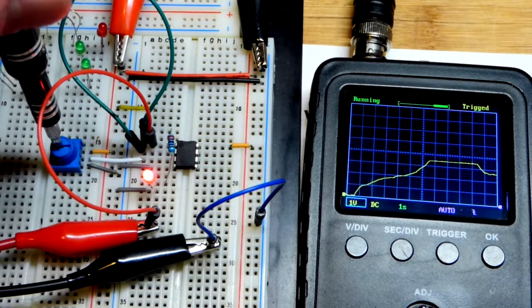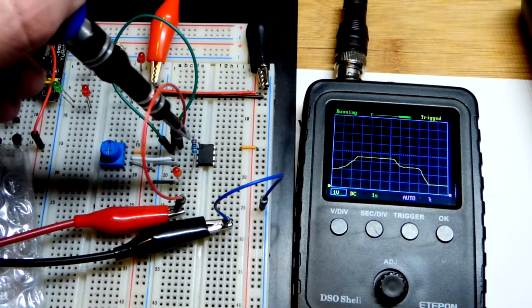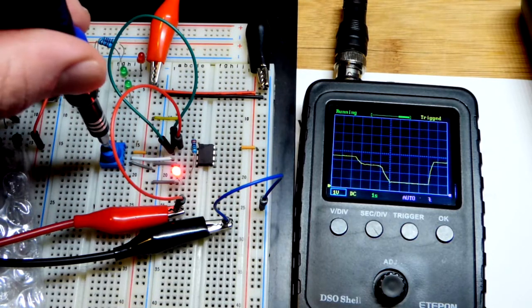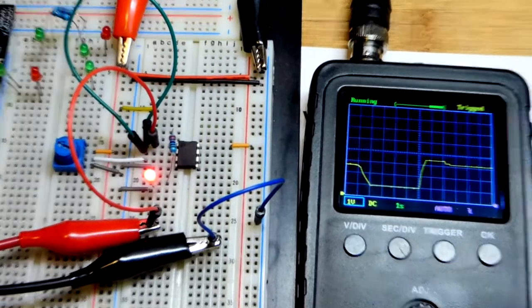So why is this important is because the trim pot, this is a 10 kilo ohm trim pot. That's a 220 ohm resistor. It does not work well at all to try to use the trim pot directly.